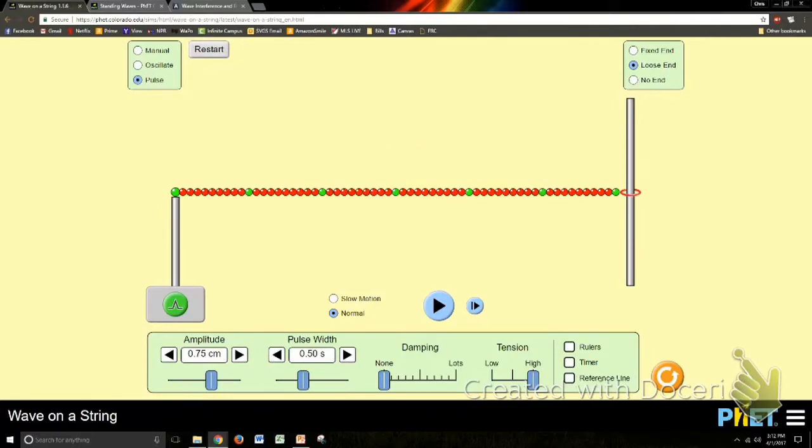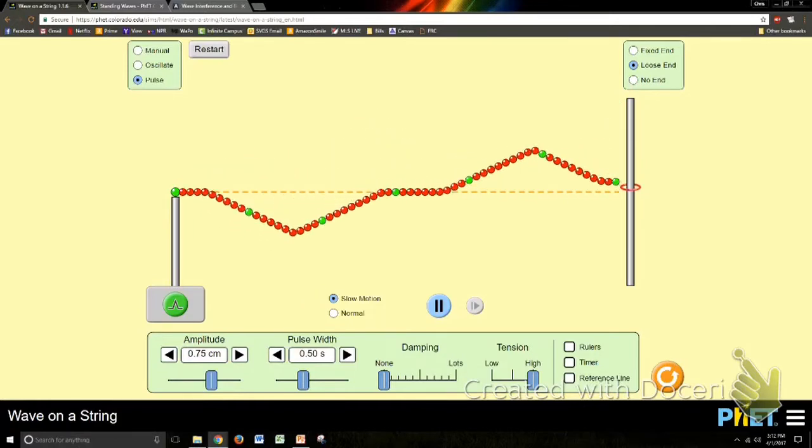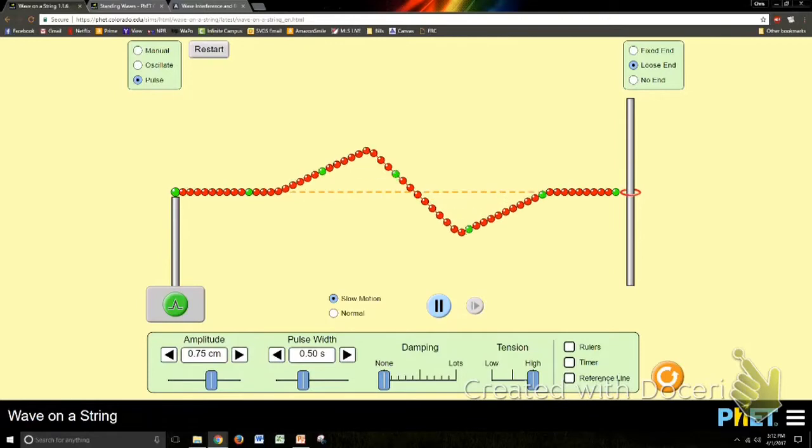If I start to send a series of pulses, then one of them might interfere with the previous one, and you get some sort of interference. Either constructive if they're both on the same side, or if they come on opposite sides of each other, you get destructive interference there in the middle.